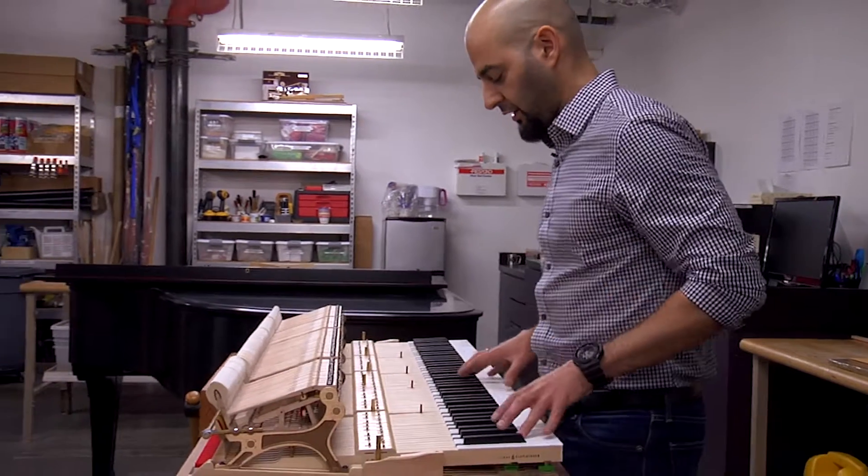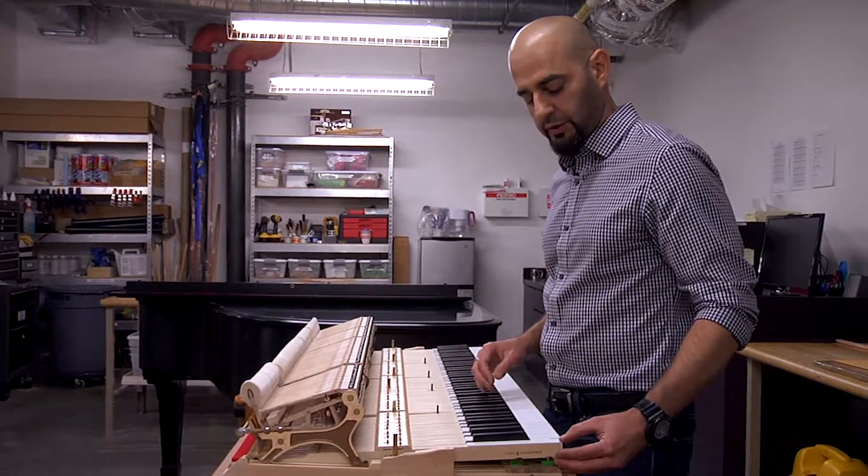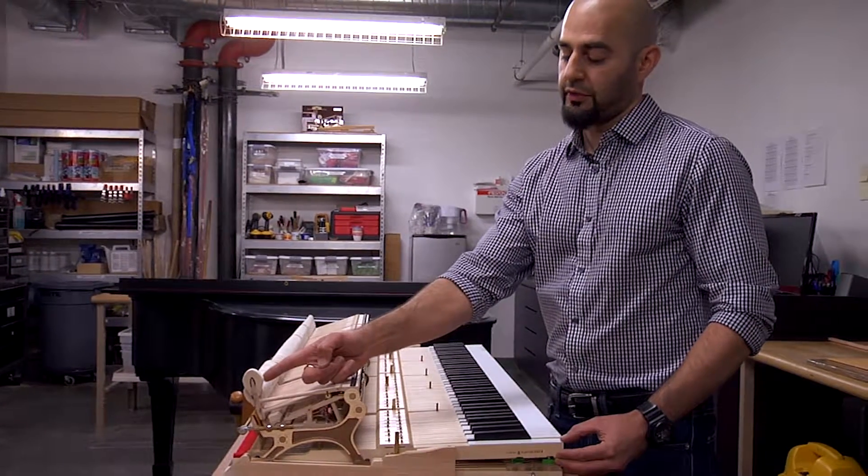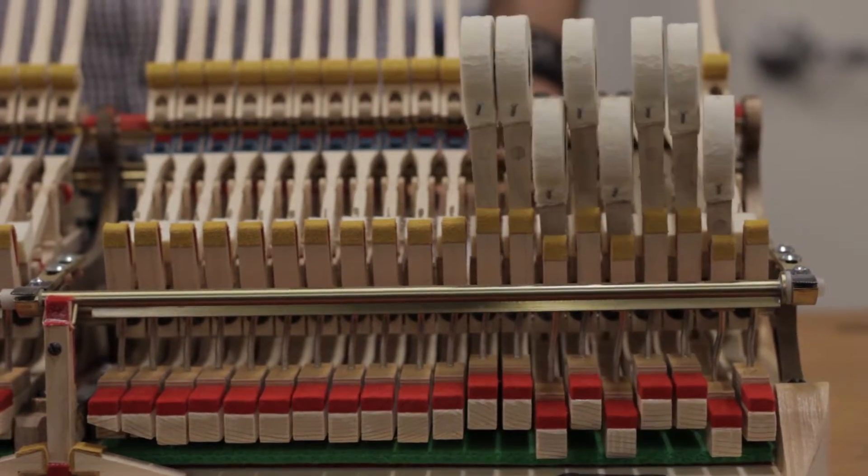Everything that happens on this side of the keyboard is magnified on this side. So it's a five to one relationship. For every millimeter this moves down, the key moves down on the back end, the hammer rises about five times that amount, so five millimeters.